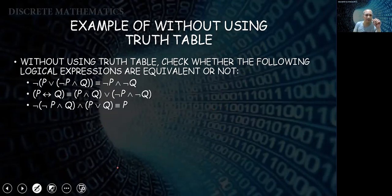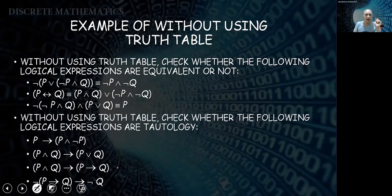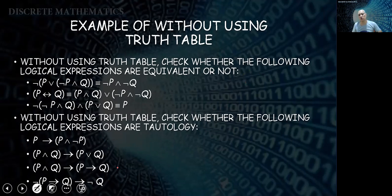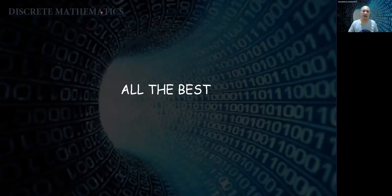For your exercises: first, prove whether the given logical expressions are equivalent using truth tables. Second, prove the given expressions without using truth tables — use only the logical laws and rules covered. The top exercise is about equivalence and the bottom about tautology. We'll discuss these later in class. All the best, and I'll see you next session.